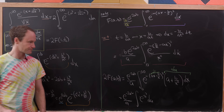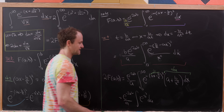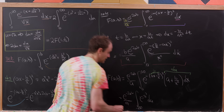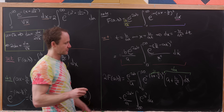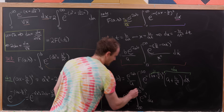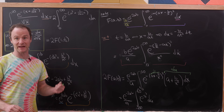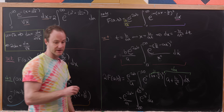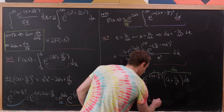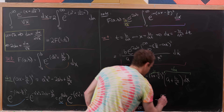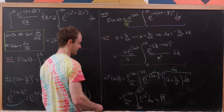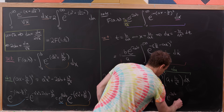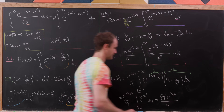With u equal to ax minus b/x, as x approaches 0 from above u approaches minus infinity, and as x approaches infinity u approaches plus infinity. So the integral becomes the Gaussian integral of e to the minus u squared from minus infinity to plus infinity, which equals the square root of pi. Therefore 2 times f(a, b) equals the square root of pi times e to the minus 2ab over a.